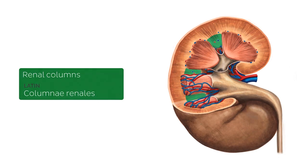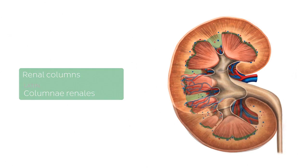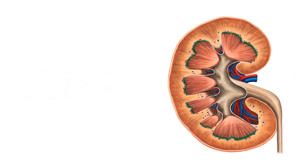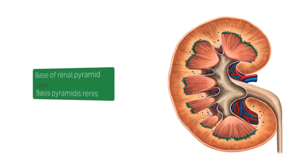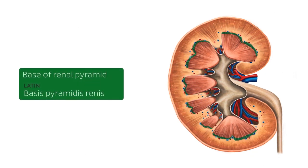The next structures highlighted are known as the bases of the renal pyramids. The base of each renal pyramid is located between the renal cortex and the renal pyramids at the corticomedullary border.